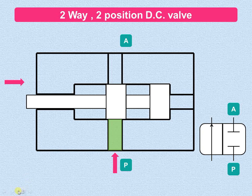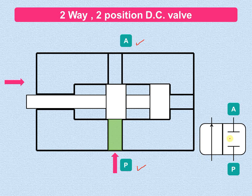The two-way stands for ports P and A, and the two positions are the left envelope and right envelope mode. In the left envelope mode the flow is taking place from P to A, whereas in the right envelope mode both the pump port (pressure port) and the cylinder port A are blocked. So there are two ways — P and A — and two positions — left and right envelope mode.